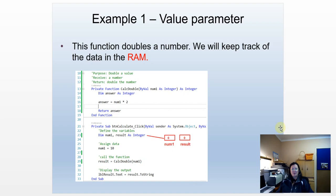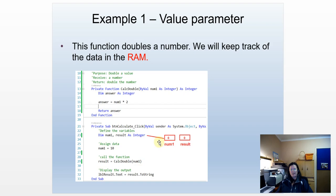Over here I've got a program that uses a function. The function gets a number, doubles the value, and returns that number. For simplicity, on line 26, I'm only assigning data — not getting it from a text box — so we can follow the execution really well. Line 23: when the program executes, two variables are created in memory — num1 and result — and in VB they get an initial value of zero. Line 26, if that executes, 10 would be stored in num1.